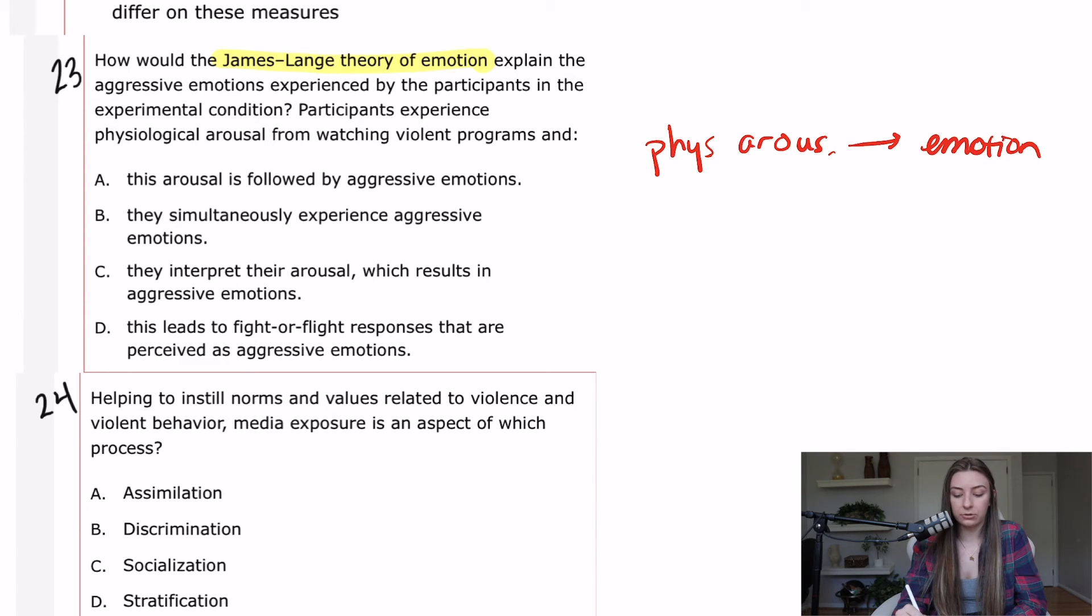So we got the physiological arousal part already mentioned in the question stem, all that we need in the answer choices for it to say, and then they had an emotion. A, this arousal is followed by aggressive emotions. Totally. It's very simple. It's very straightforward. It's very James-Lange-y. B, they simultaneously experience aggressive emotions. So simultaneously that will be Cannon-Bard every time. Anything that mentions same time or simultaneous, Cannon-Bard. C, they interpret their arousal. I'm already interpreting is Schachter-Singer. Any kind of cognitive appraisal interpretation, that's Schachter-Singer. D, this leads to fight or flight responses that are perceived as aggressive emotions. I'm not sure what they're trying to point to here. If they're trying to point to a specific theory or if they're just trying to kind of throw some stuff in there and hopefully it makes you bite. But A is just a solid James-Lange answer.